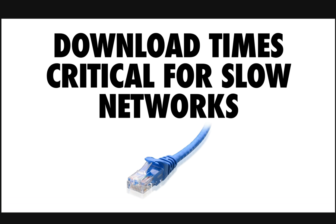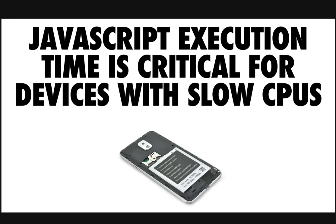The two key problems to keep in mind: download time is critical for slow networks, and JavaScript execution time is critical for devices with slow CPUs. On the server, you get what you pay for with your CPUs, disks, and networks. As we build sites more heavily reliant on JavaScript, we sometimes pay for what we send down in ways that we can't see. The shape of success is whatever lets us send less code while delivering the maximum value to our users.